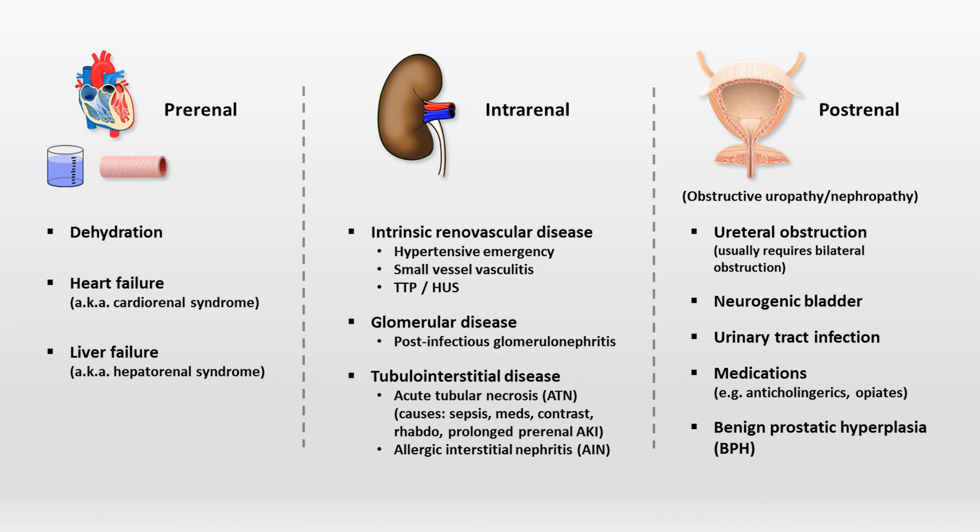The next consideration is the list of etiologies of low urine output. You might be tempted to use the standard framework for acute kidney injury, but remember that's not exactly the situation here. The cause needs to be something which progresses from undetectable on your daily chemistry panel to severe enough to be causing low urine output within the same day. Some diagnoses such as AIN, vasculitis, TTP, and even hepatorenal syndrome don't typically do that.